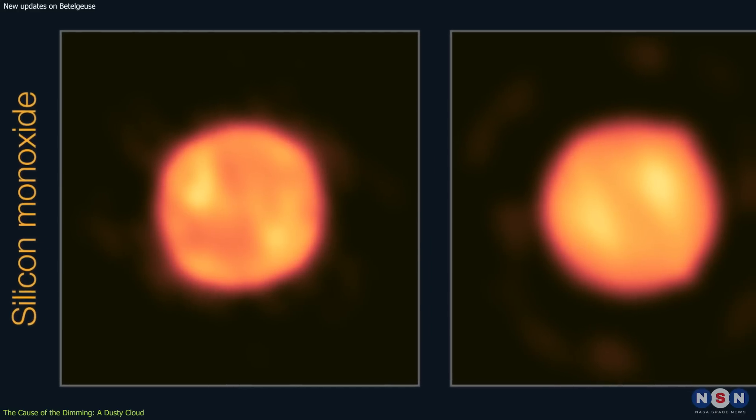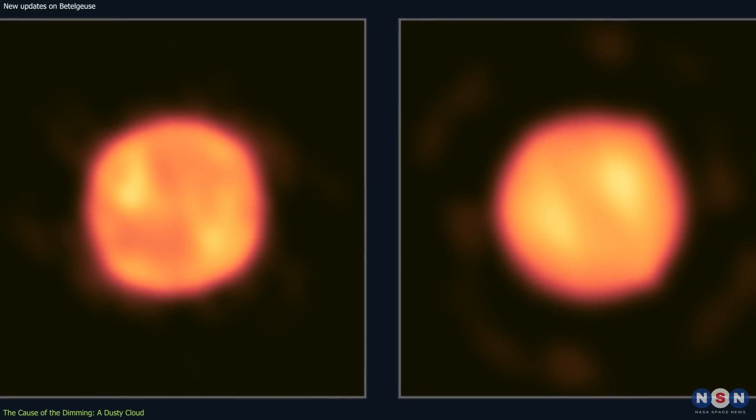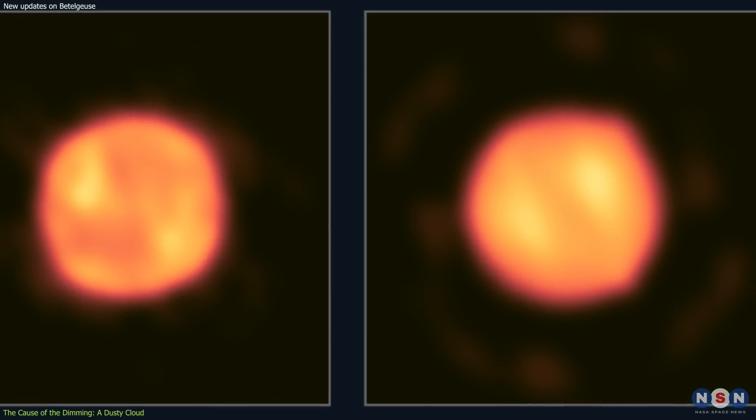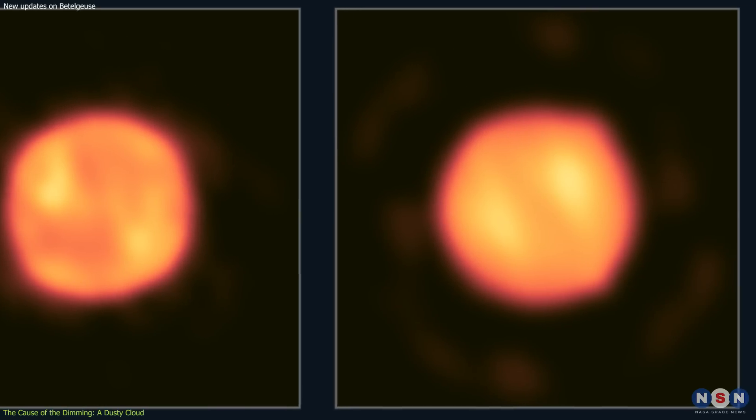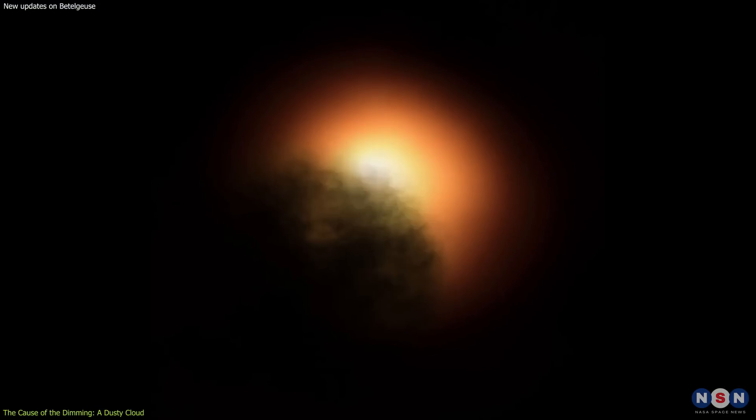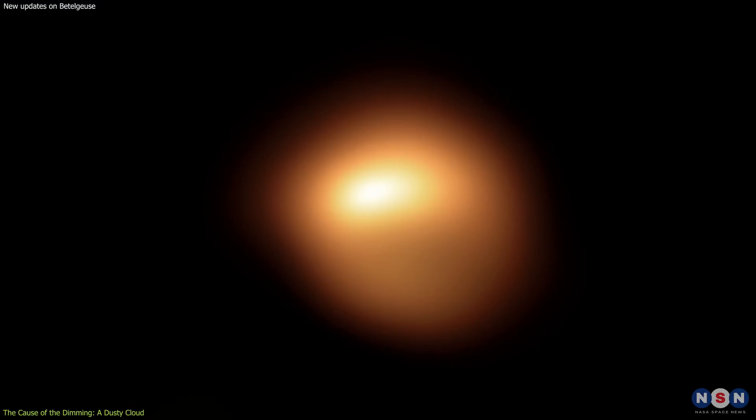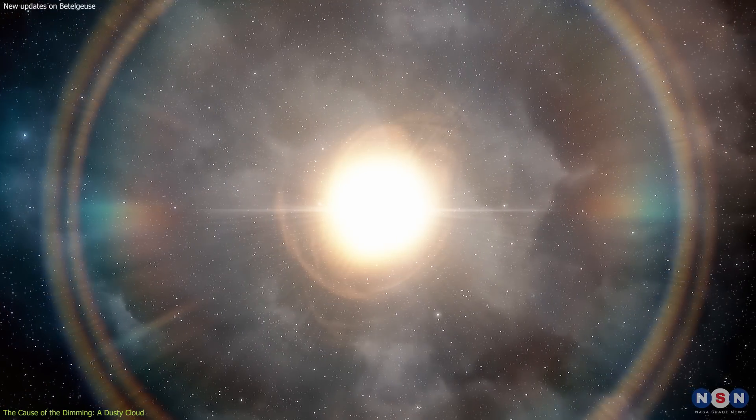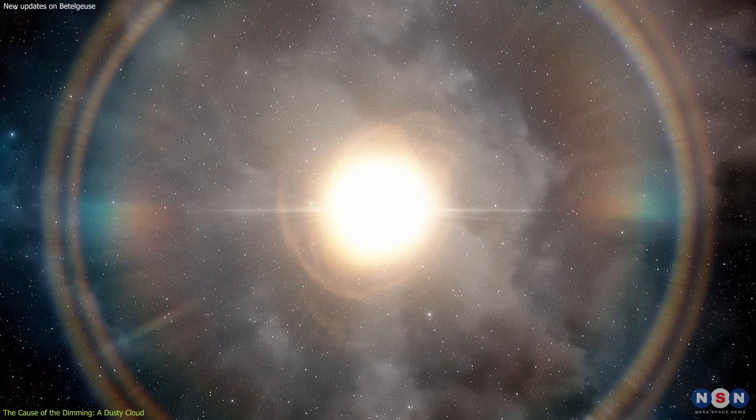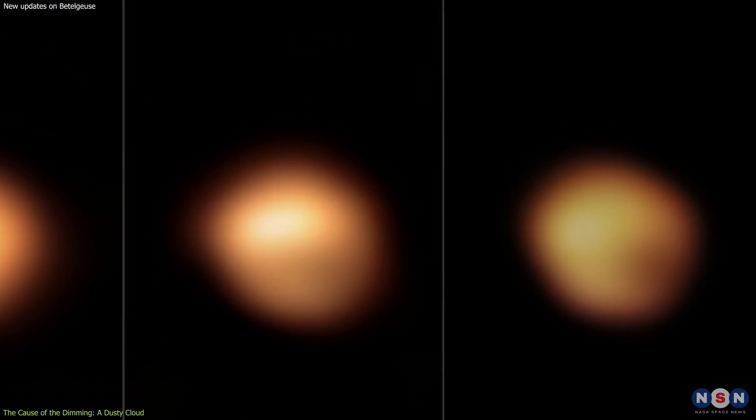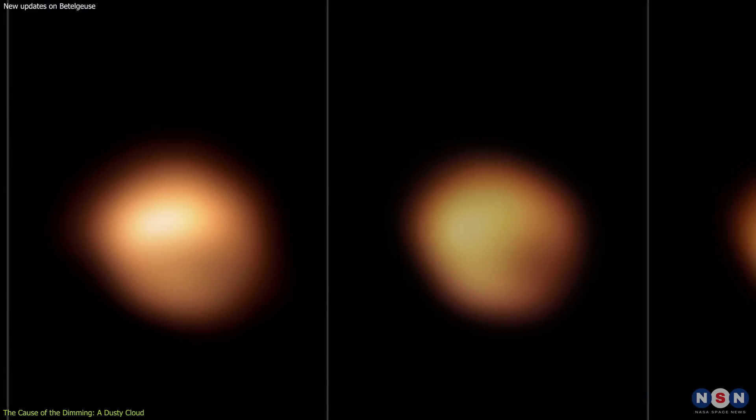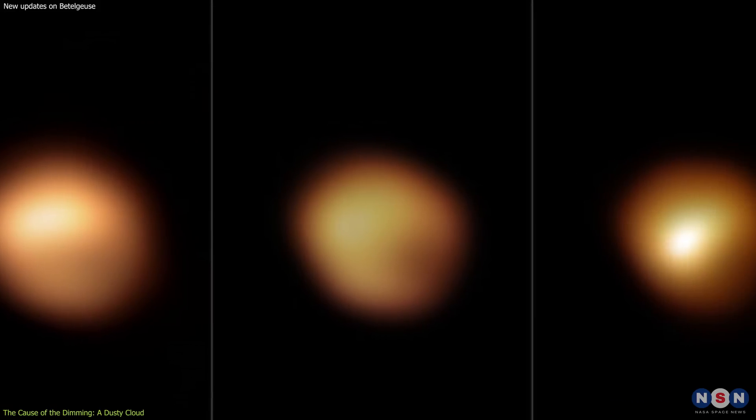The images from SPHERE show that one of these convective cells was located on the southern hemisphere of Betelgeuse, where the dust cloud was also seen. The dust was blocking about 50% of the light from that hemisphere, making it appear much darker than the rest of the star. It was also asymmetric, meaning that it had an irregular shape and size. This explains why Betelgeuse's dimming was not uniform across its surface, but varied depending on the viewing angle and wavelength.